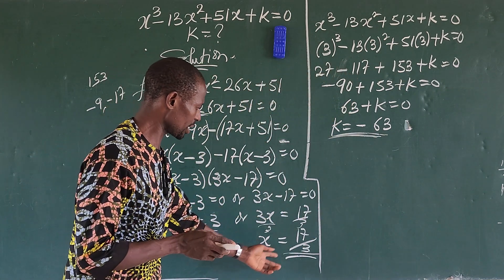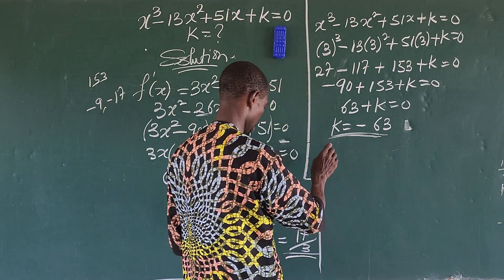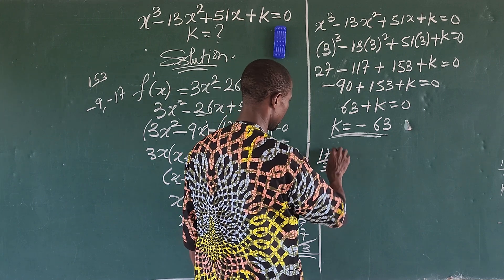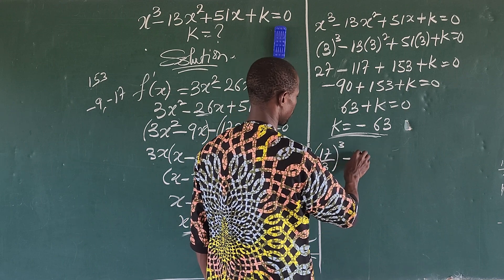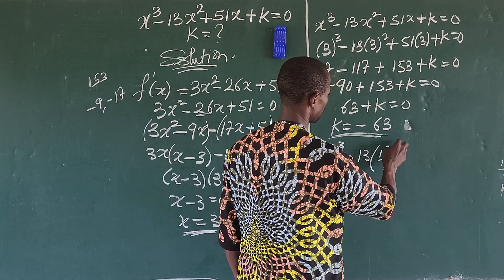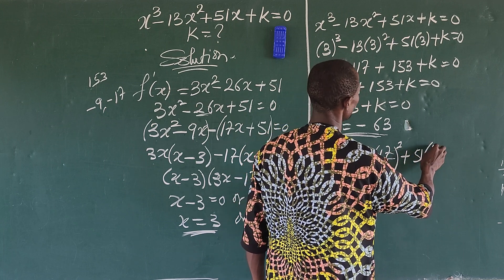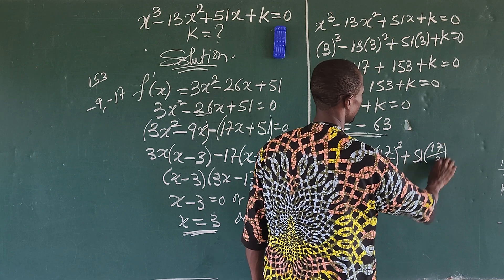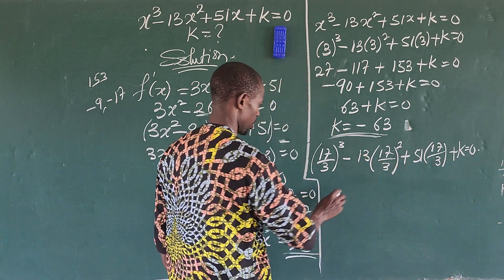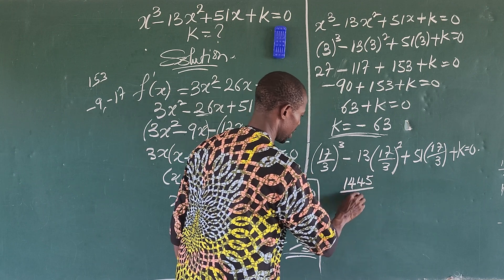Now for x equals 17 over 3, we substitute into the equation. We have 17 over 3 all raised to the power of 3, minus 13 times 17 over 3 squared, plus 51 times 17 over 3, plus k equals 0. Simplifying this gives 4913 over 27, and continuing the calculation will yield the corresponding value of k.